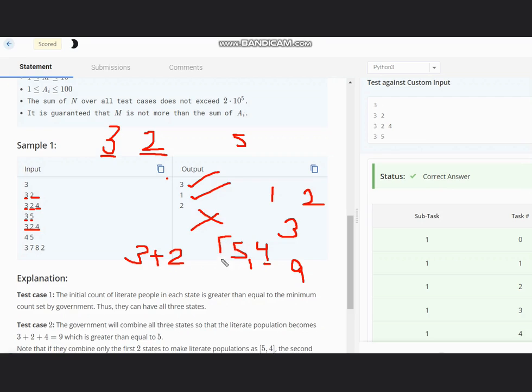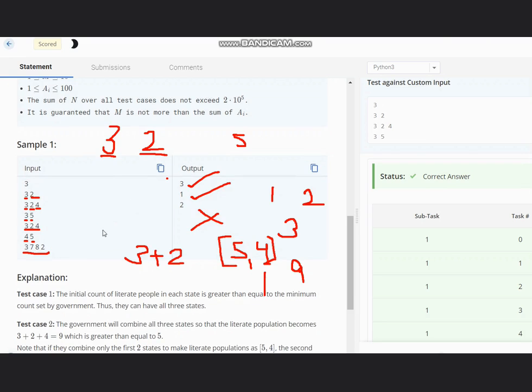And if you take 5 comma 4 then also the maximum answer would be 1. Now in case of this you see 3 is less than 5 so let us combine suppose 3 and 7 so it will become 10 and 8 and 2 it also becomes 10.